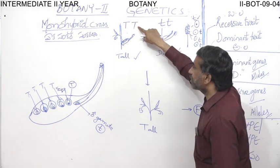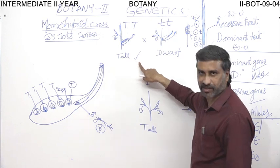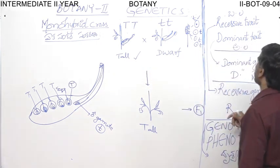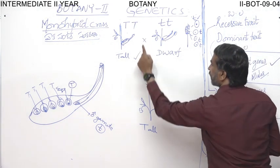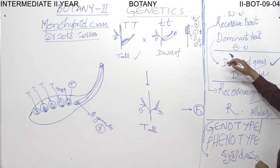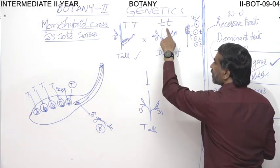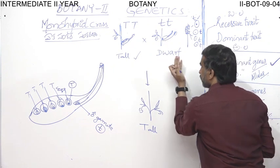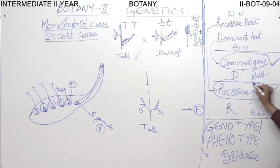The genes responsible for coding a dominant character or dominant trait are known as dominant genes. The genes responsible for the expression of a recessive character are known as recessive genes. So now we know the terms dominant genes and recessive genes.